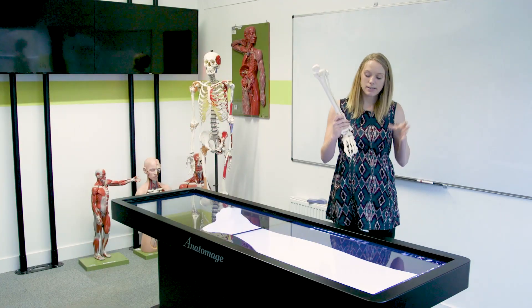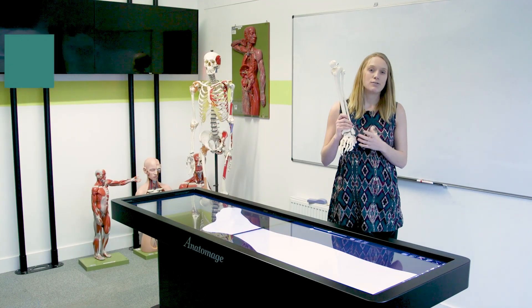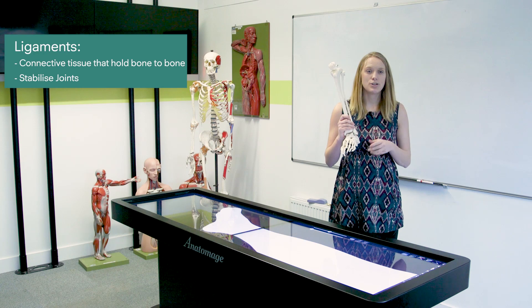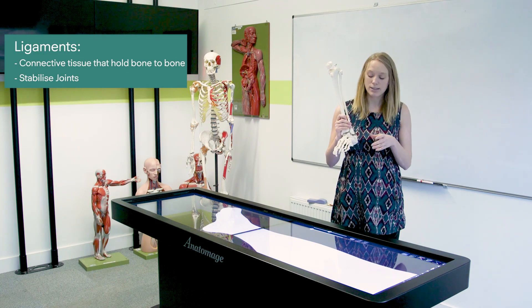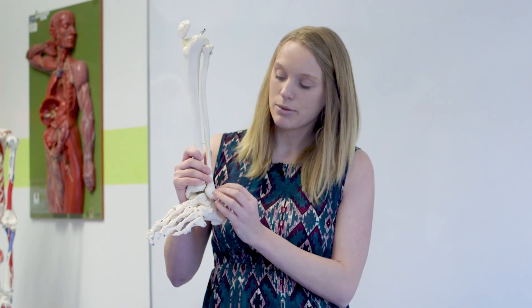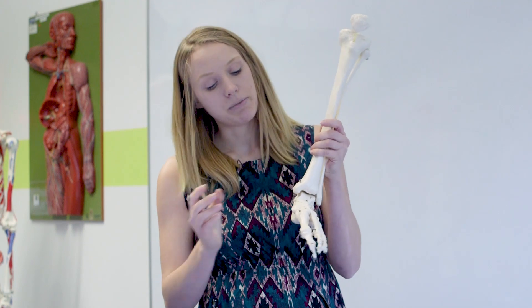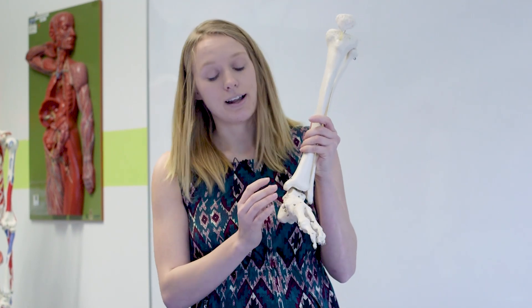This happens because the ligaments - so ligaments are connective tissue that hold bone to bone and they stabilize joints - the ligaments on this side of the foot, the lateral side of the foot where your little toe is, are much weaker than the ligaments on this side of the foot.